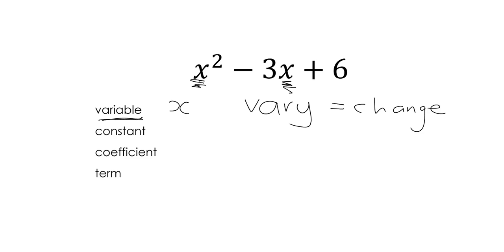Then in contrast to the variable, we have the constant. Now in English, the constant, what is a constant? If I talk about something being constant, it is something that stays the same. So something that's constant is something that stays the same.